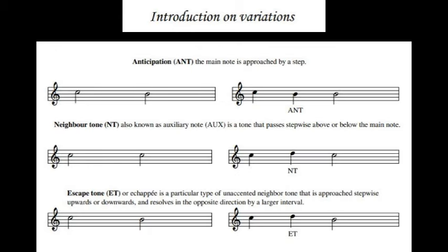Some basic techniques are figurations. Here in this example we have first of all two notes. We have the C and the B. So the first variation is the anticipation which is that the main note is approached by a step. Then secondly, when we have two same notes, C and C, there we can use a neighbor tone. A neighbor tone, also known as auxiliary note, is a tone that passes stepwise above or below the main note. So you can step up or step down and it goes back to the main note.